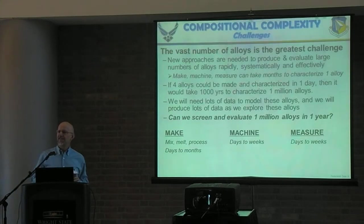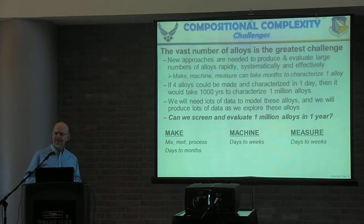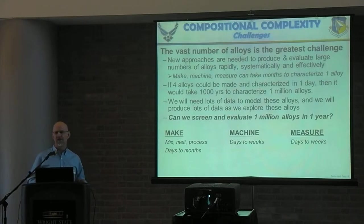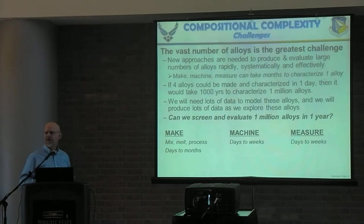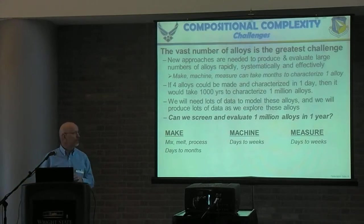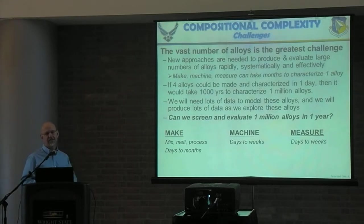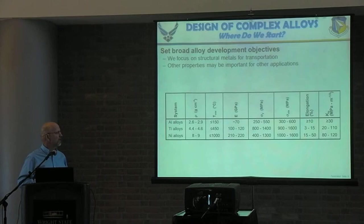What's the problem? The problem is the same thing — the vast number of systems to look at. People will say there's a thousand opportunities, a million, a billion — I'll study this one. There's no real way to look at the vast array of possibilities systematically. The way we do it now is we make, machine, and measure one alloy at a time. It takes us six months to characterize one particular alloy. If we could characterize four alloys a day, it would still take us a thousand years to go through a million different possibilities.